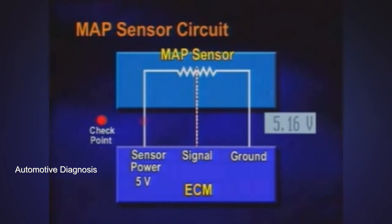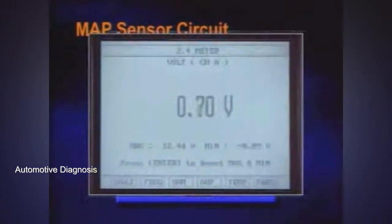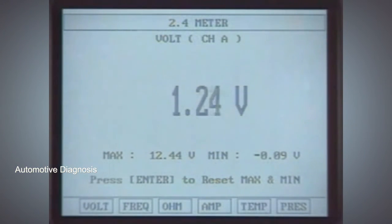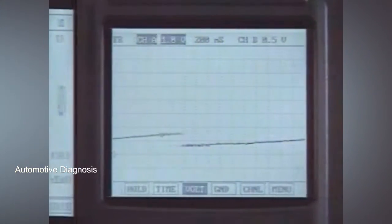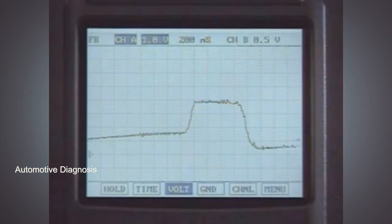To check the sensor power wire and ground wire, measure the voltage at each terminal. To check the signal wire, measure the waveform and voltage at the signal wire depending on engine condition.